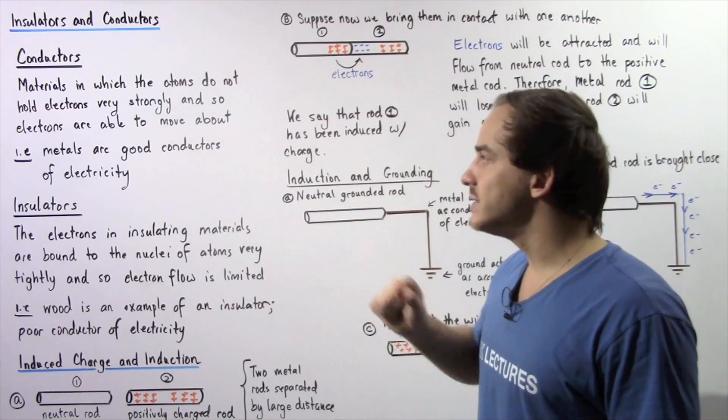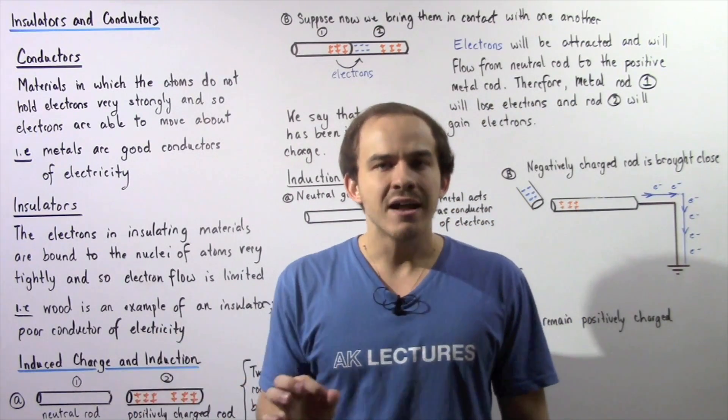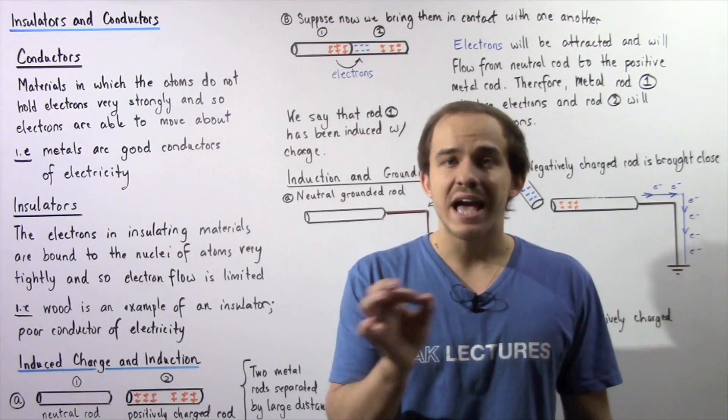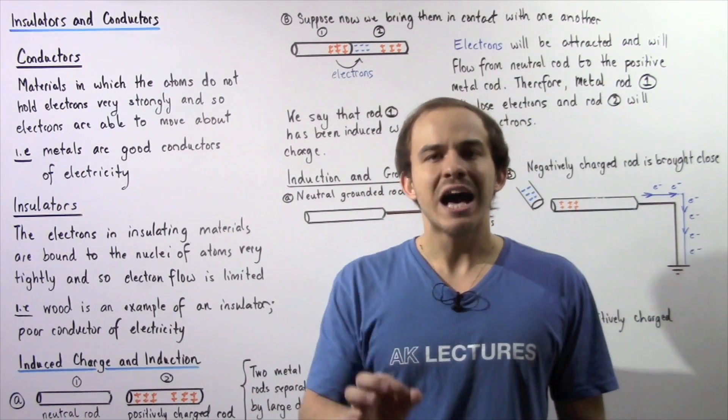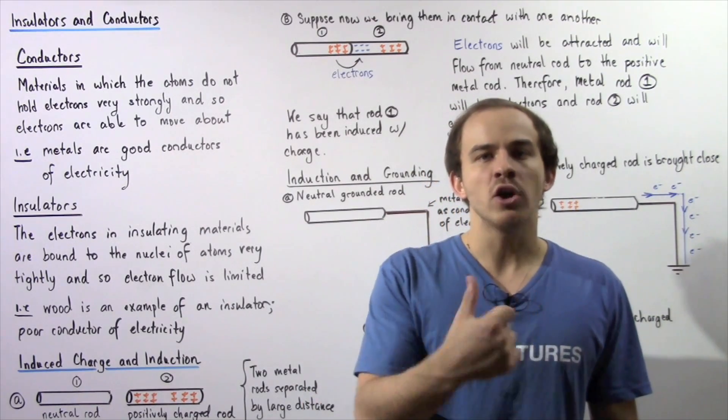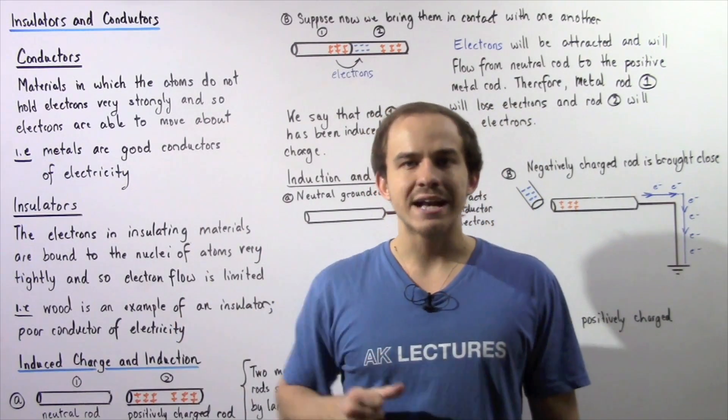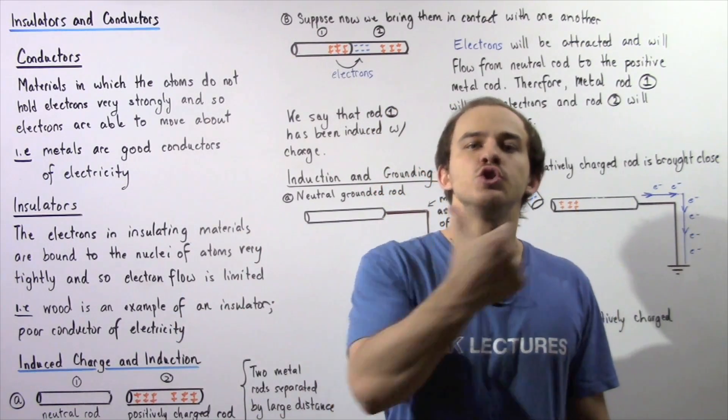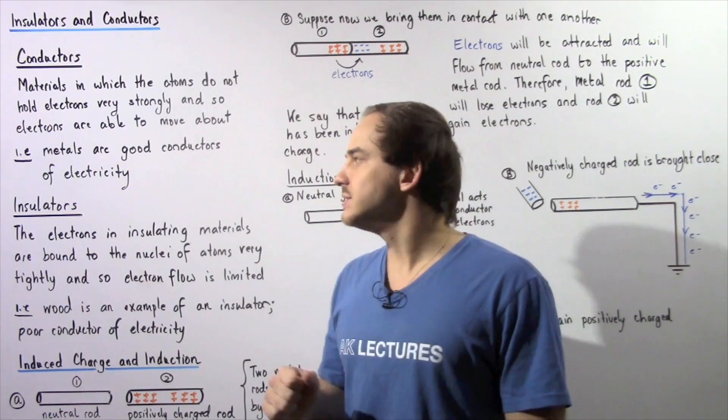Metals are good conductors of electricity because the atoms, the nuclei within the atoms of metals, do not hold electrons very strongly, and so electrons are able to flow from one section of that conductor to a different section of that conductor.